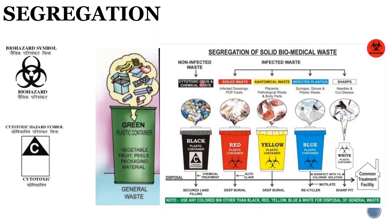For infected waste: the red bag is for infected dressings — cotton, dressings, POP cast, bedding, etc. The yellow bag is for anatomical waste — placenta, pathological waste, and body parts. The blue bag is for infected plastic — syringes without needles, gloves, and other plastic waste. The white puncture-proof container is for sharps, since sharps could puncture a non-proof container.